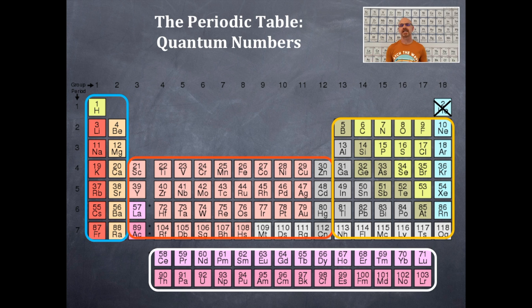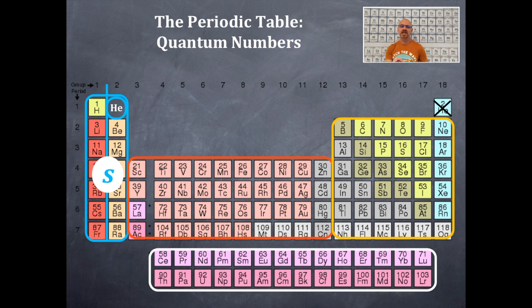We're going to cross out helium in the upper right-hand corner and replace it — moving it to where it belongs for this activity, which is right next to hydrogen. Now, this whole blue section contains the S-type orbitals. I've drawn a vertical line halfway through the middle of that S-type orbital section. There's a reason for that vertical line, which will become apparent in just a little bit.